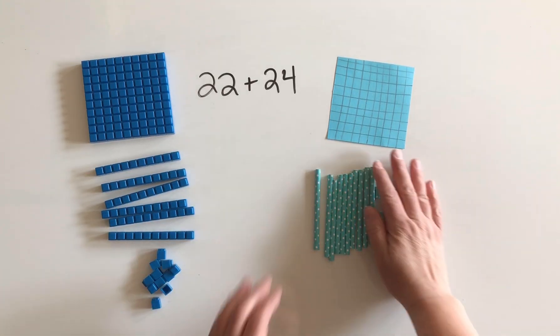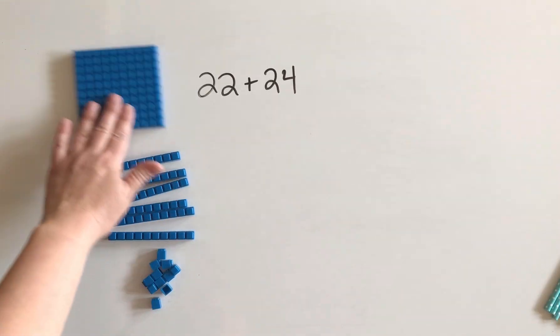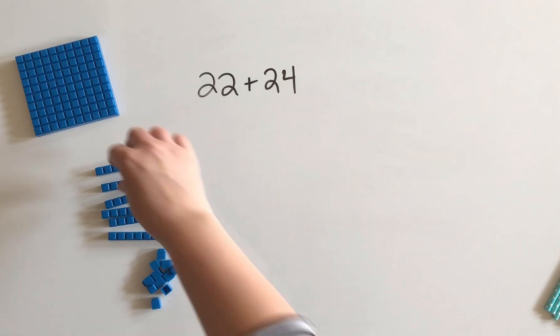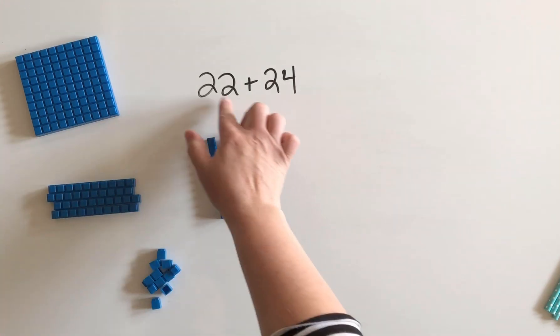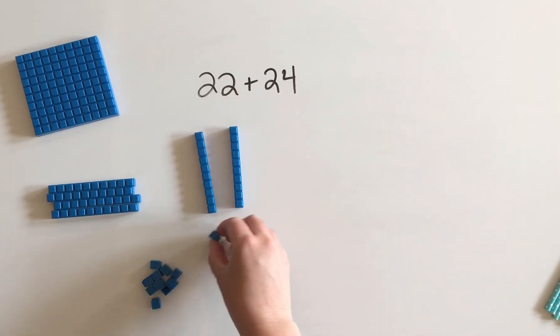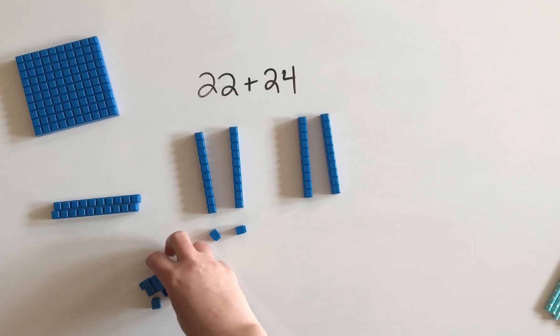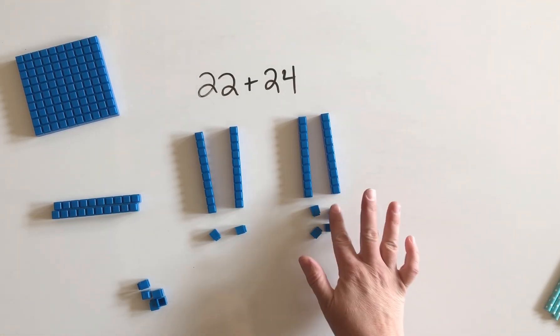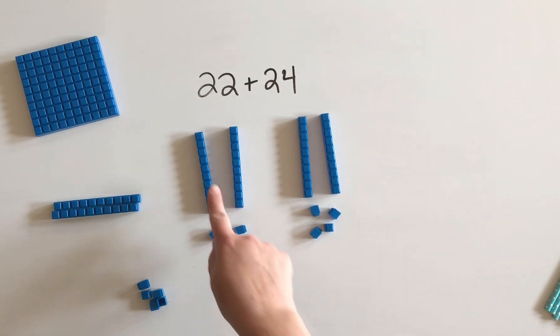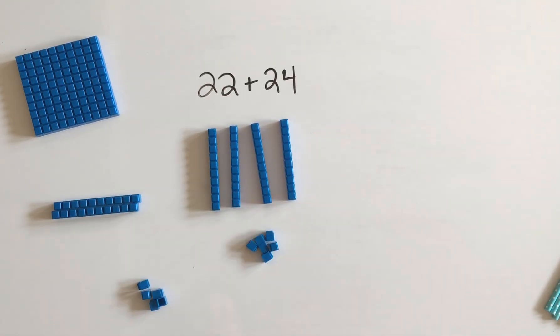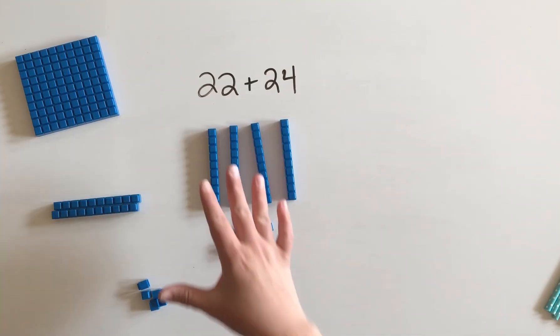Now I'm going to show you how you might use these. So if you are solving 22 plus 24, first of all you could ask them to build the numbers. So to build 22 we need 2 tens and 2 ones. To build 24 we need 2 tens to make 20 and then 4 ones to make 4. Now to find the sum, to find the total, we can first of all add up the tens because that's easiest to go 10, 20, 30, 40, and then we group the ones together and add the ones. So we have 41, 42, 43, 44, 45, 46. So the answer is 46.